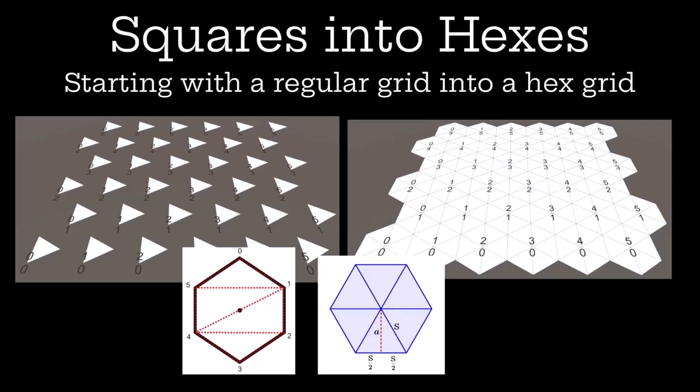Next, we use the regular grid and turn it into a hex grid by essentially taking the origin of all of those squares, and then instead of making triangles that make a square, we make a whole lap around a pizza, basically, and create our hex that way. There are more efficient ways, as you can see in the bottom left, to create a hexagon with triangles. However, the reason we're doing it this way, like a pizza, is it makes it a lot easier when we want to do things like create mountains and cliffs.